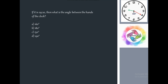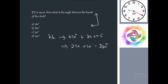Problem: If it is 9:20, what is the angle between the hands of the clock? At 9 o'clock, the short hand is at 270 degrees. For 20 additional minutes, the hour hand moves 20 × 0.5 = 10 degrees, so total hour hand position is 270 + 10 = 280 degrees. The minute hand at 20 minutes is 20 × 6 = 120 degrees. The angle between them is 280 − 120 = 160 degrees. Answer: option A.